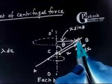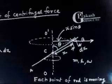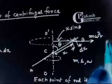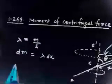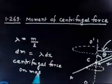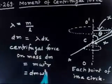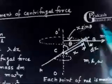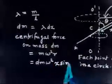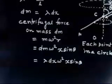The centrifugal force is m * omega^2 * r, acting radially outward. So the centrifugal force on mass dm is dm * omega^2 * r, where r = x sin theta. Substituting dm = lambda * dx, the centrifugal force on the element is lambda * dx * omega^2 * x * sin theta.